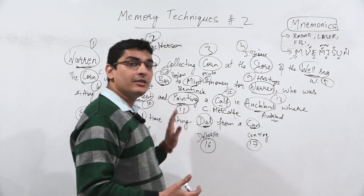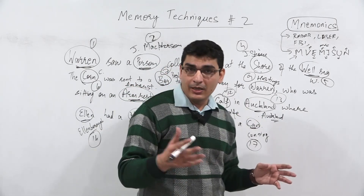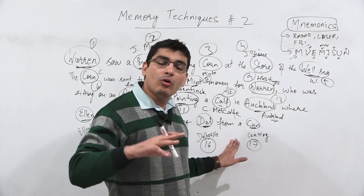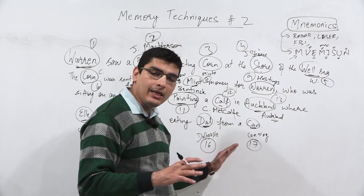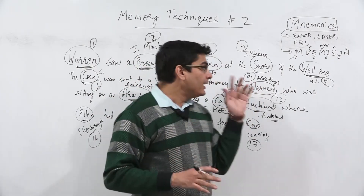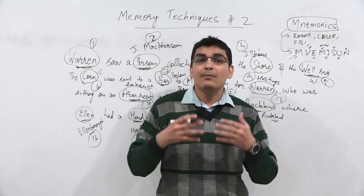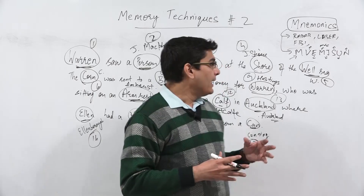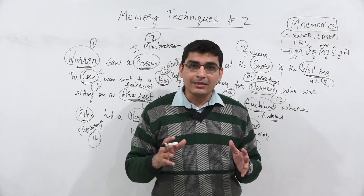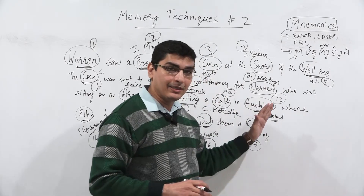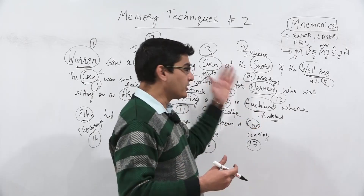You may say remembering the names is easy, but what if you also want to remember the years — the duration of office of each Governor General? That can also be done. For this we need the major system, also called the phonetic peg system. In that system we convert numbers into sounds — it is the sound that is important. For that I will need another story and a chart to convert numbers into sounds.